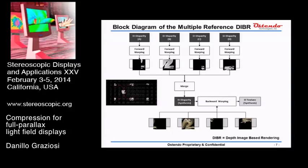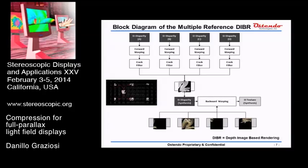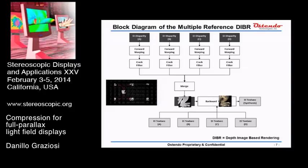The next step is to merge those — for example, four disparities together — and we obtain the disparity map of our target. Then in possession of this disparity map and the reference texture, we perform backward warping, which is the inverse operation of forward warping. While forward warping projects from the reference to the target elemental image, backward warping fetches the texture from the reference images.